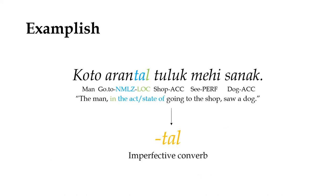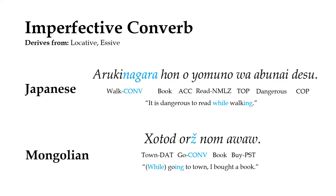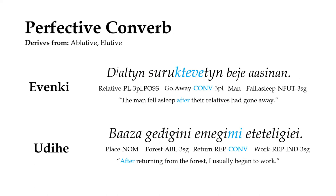In our earlier example, we used a locative case marker to encode that the action of the converb happens at the same time as the main verb, having a similar function to the English conjunctions while or when. This simultaneous or imperfective converb is one of the most cross-linguistically common types of converb, and usually evolves from case markers with some sort of locative function. Meanwhile, the ablative or a similar case often gives rise to a perfective or anterior converb, which signals that the converb clause was completed before the action of the main verb phrase, roughly approximated in English with having done or after.